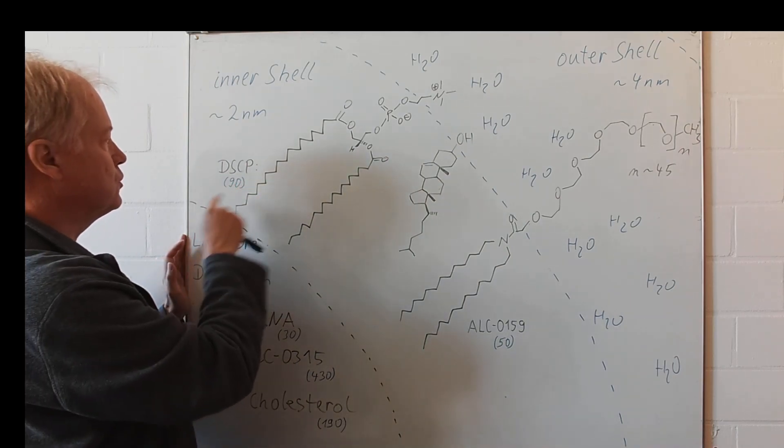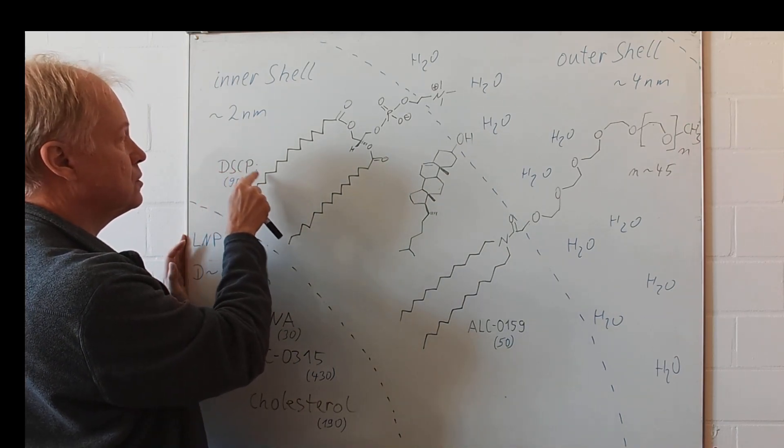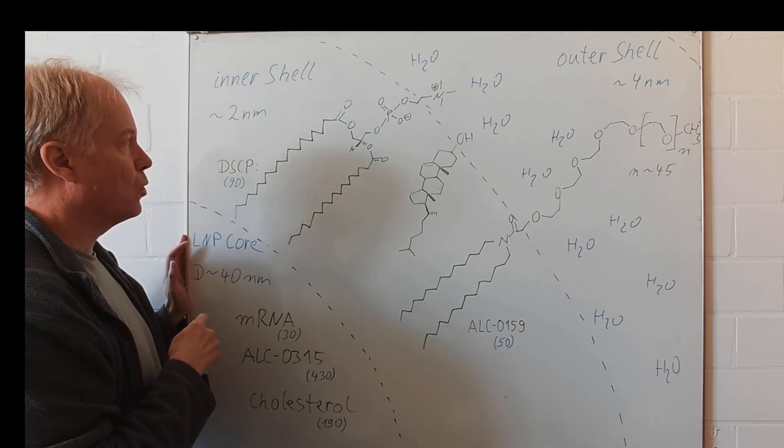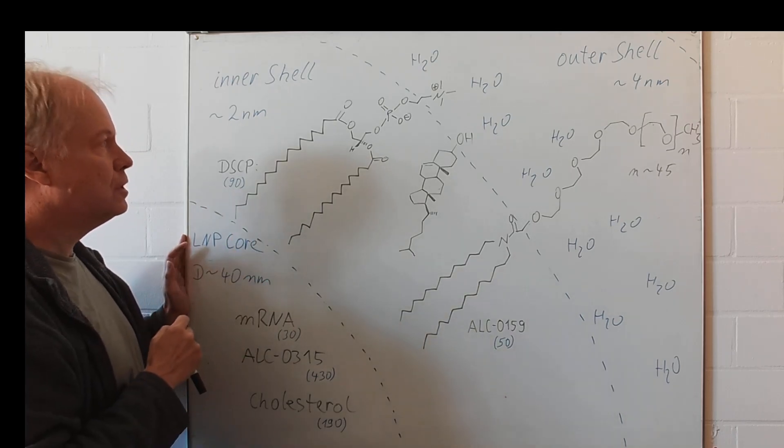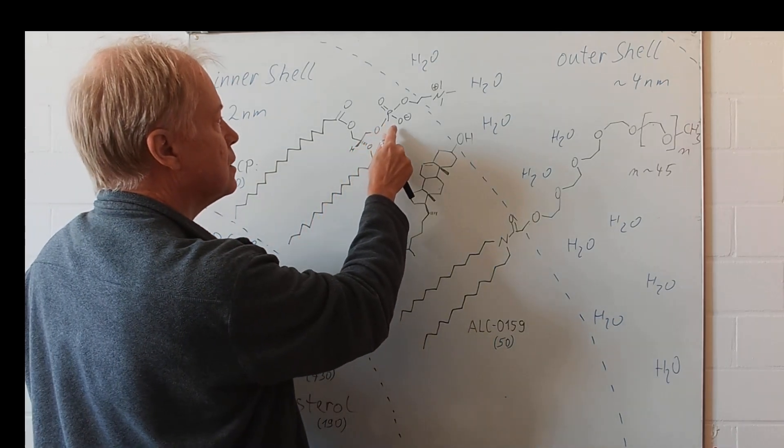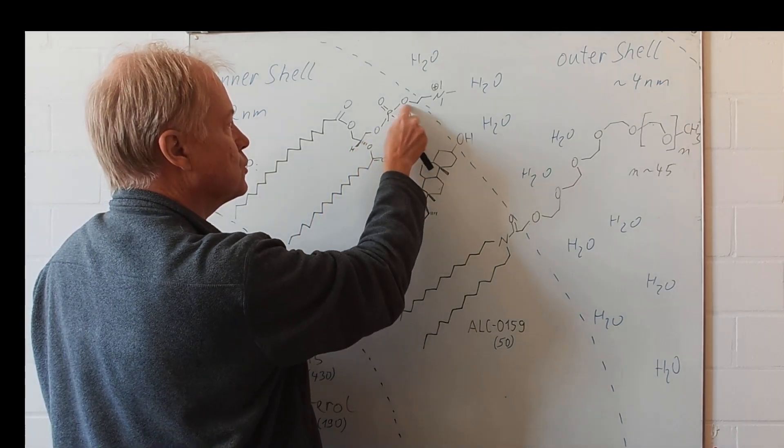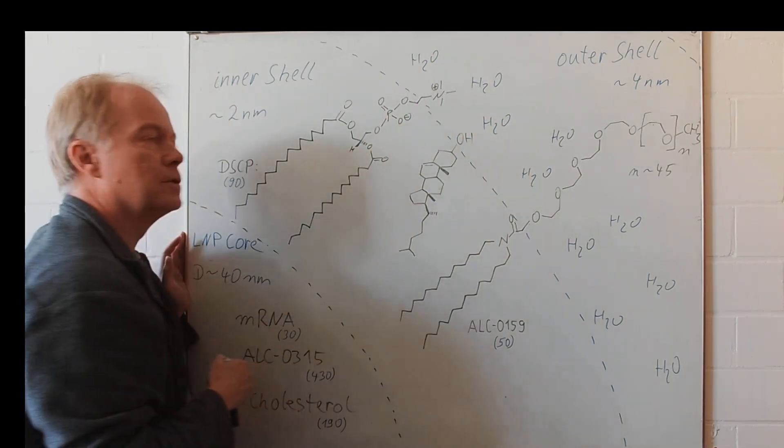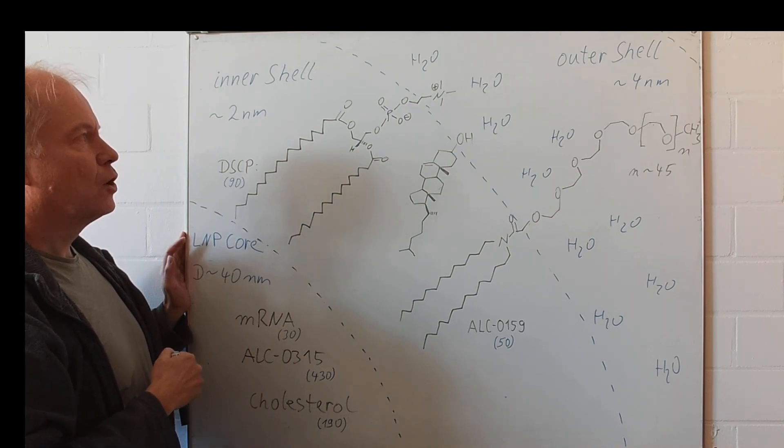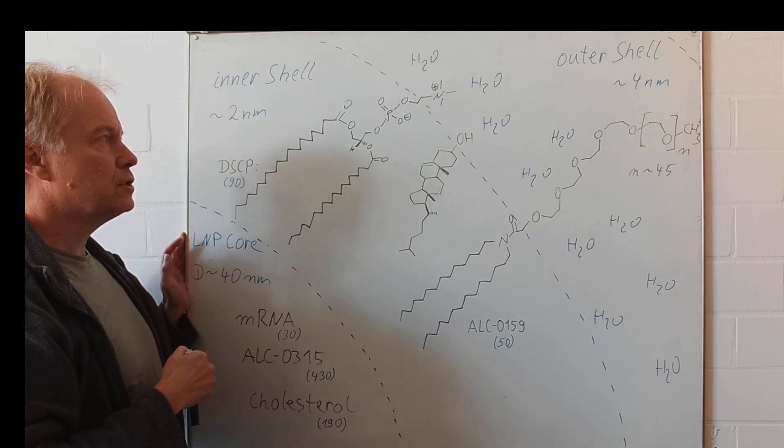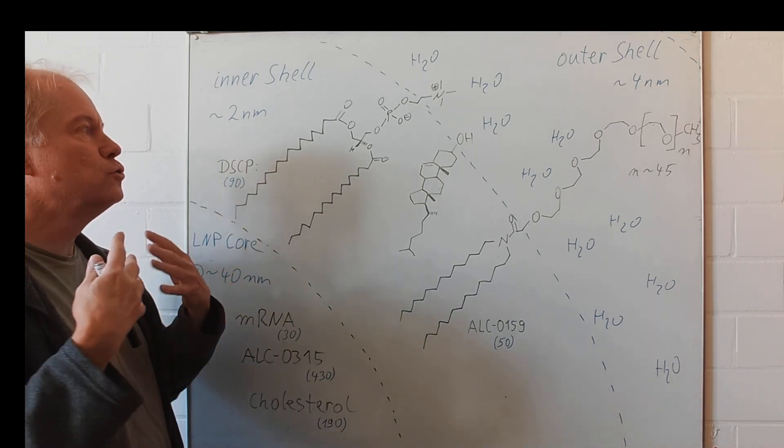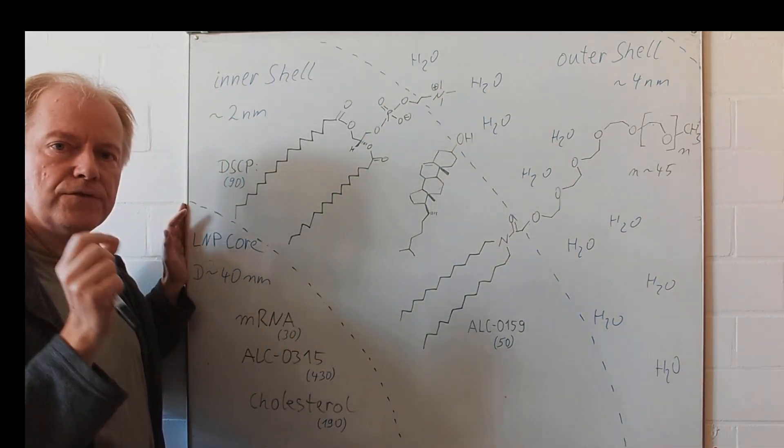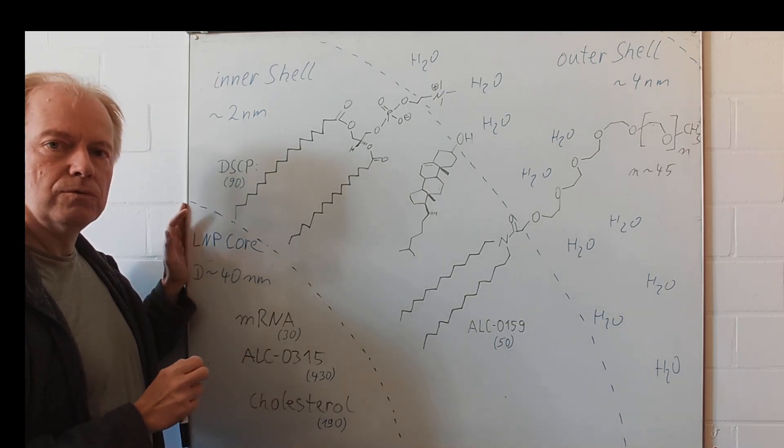We have this compound, DSCP abbreviated. It is a so-called phospholipid. And here, we have a phosphate, an iron, and an ammonium cation. Overall, it is from the charge neutral. And this is very polar and therefore hydrophilic.